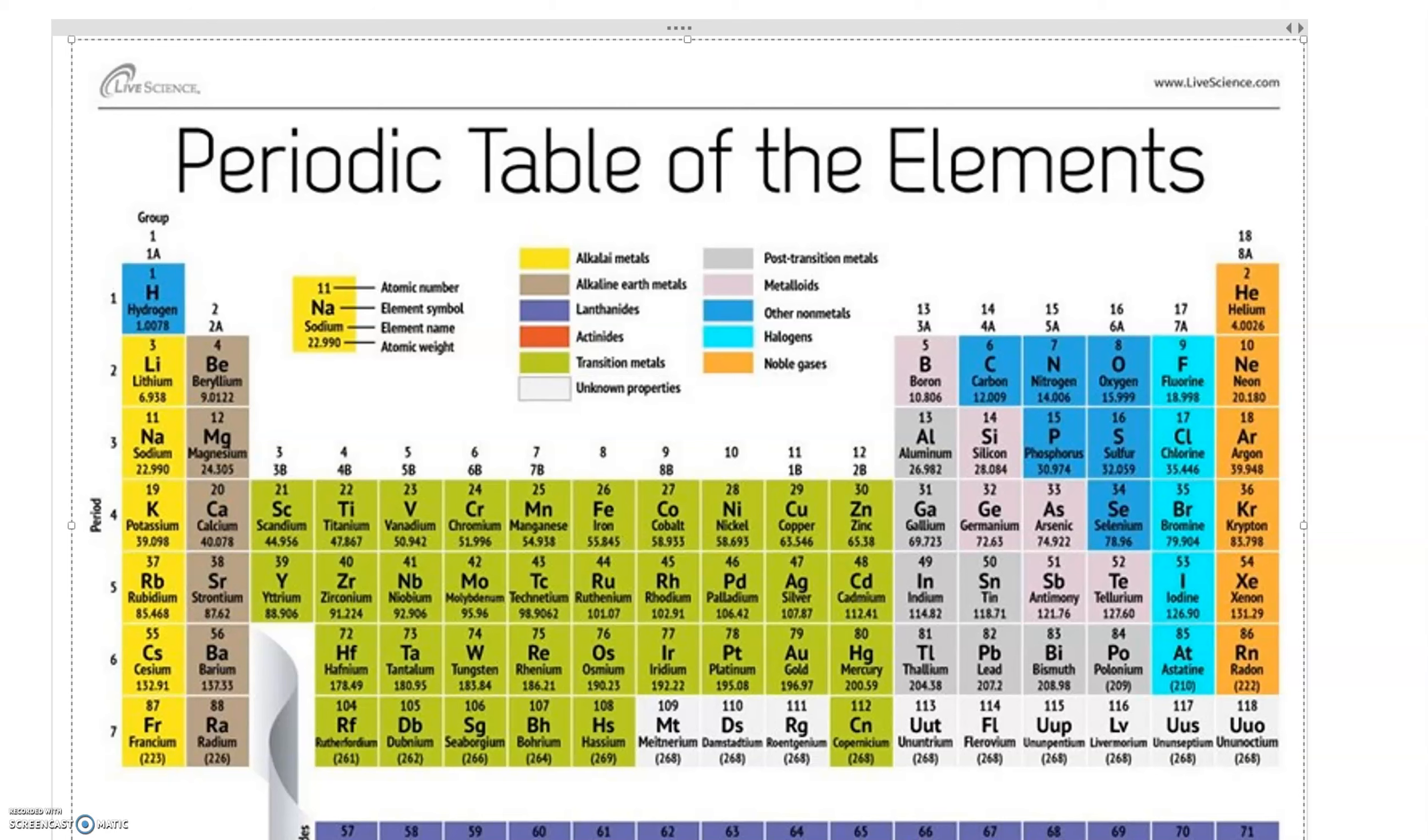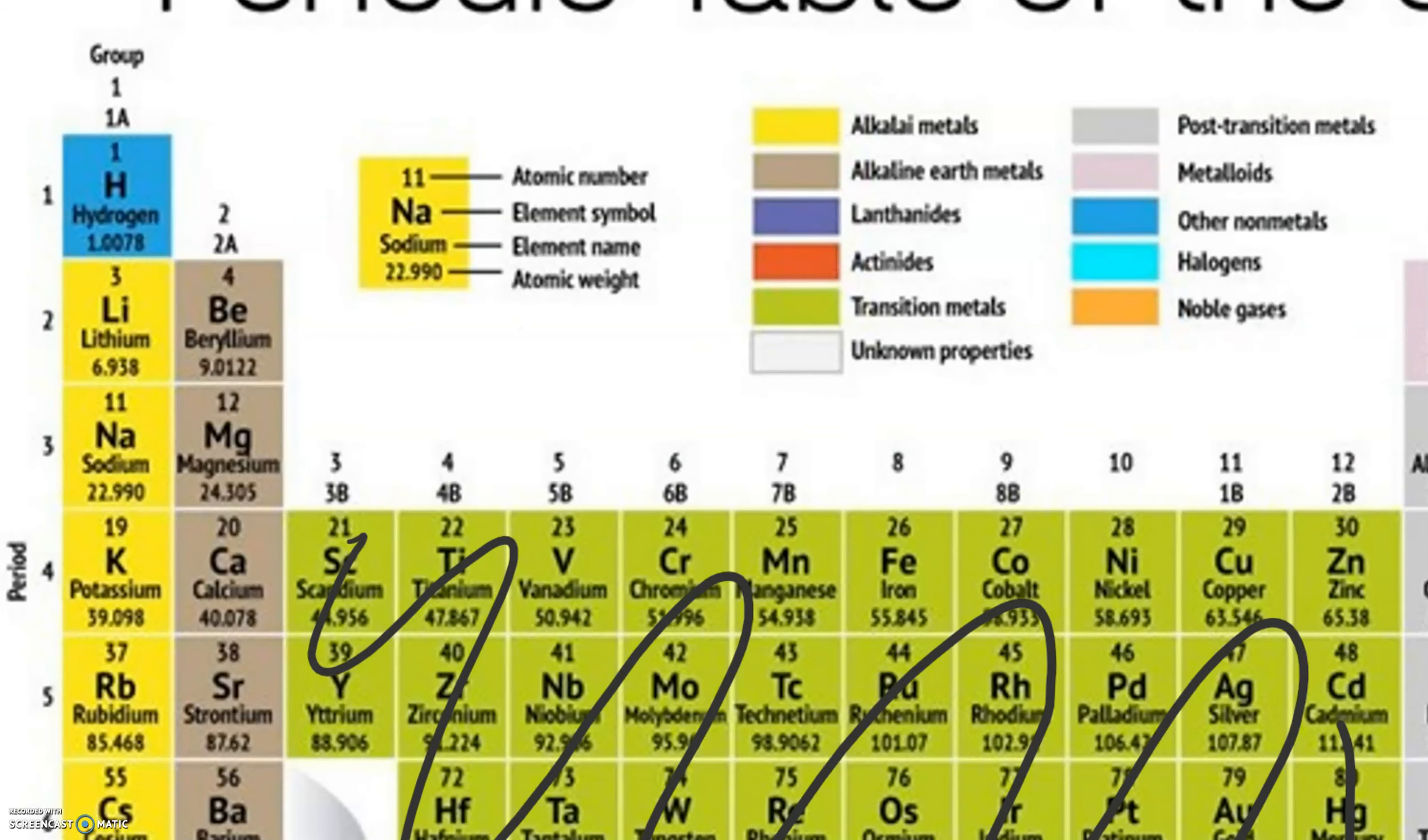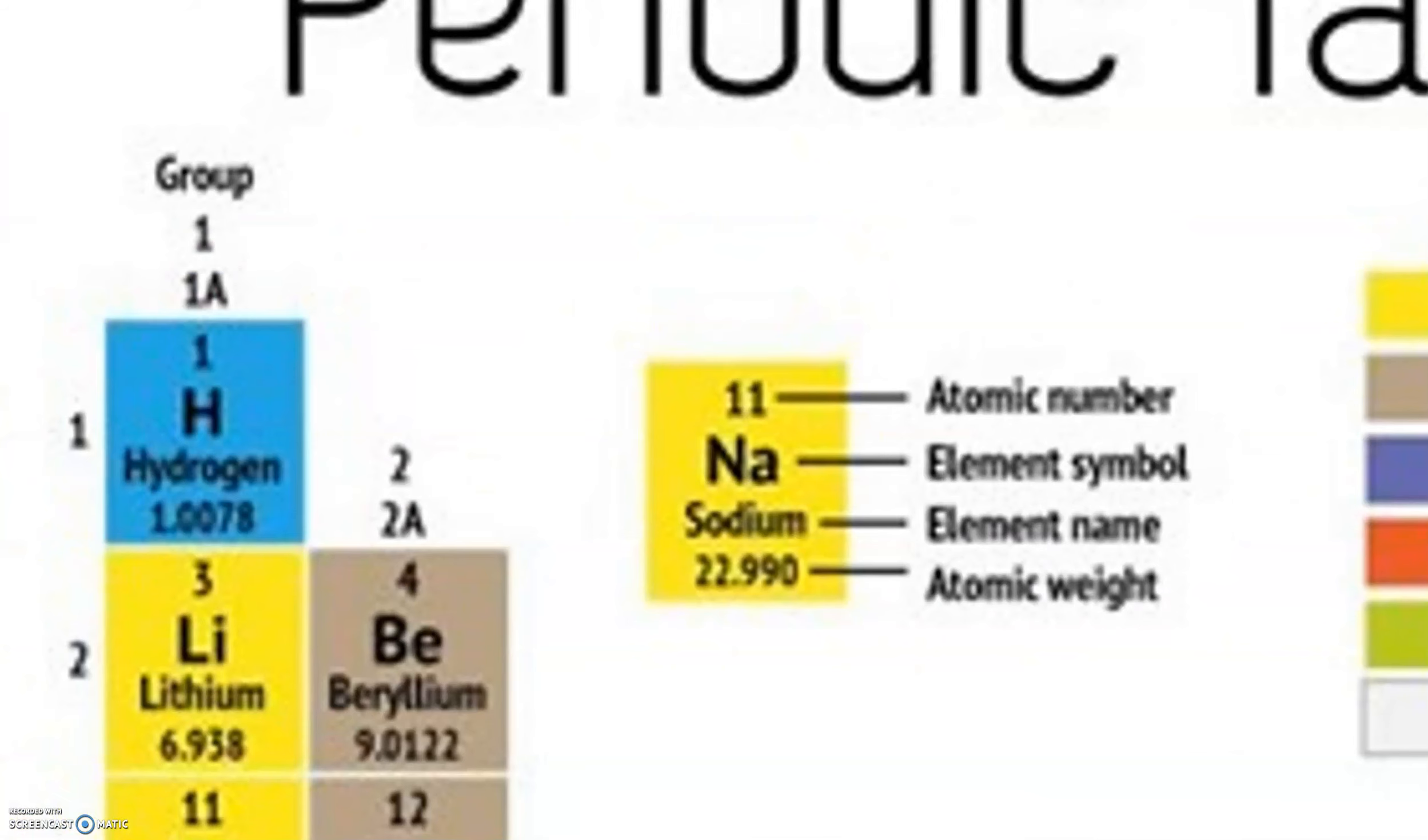Your periodic table already has a built-in system for immediately telling us how many valence electrons every atom has. The first thing we want to do is ignore this middle section and also ignore this bottom section. If we look at the top of each of these columns, there are two numbers.